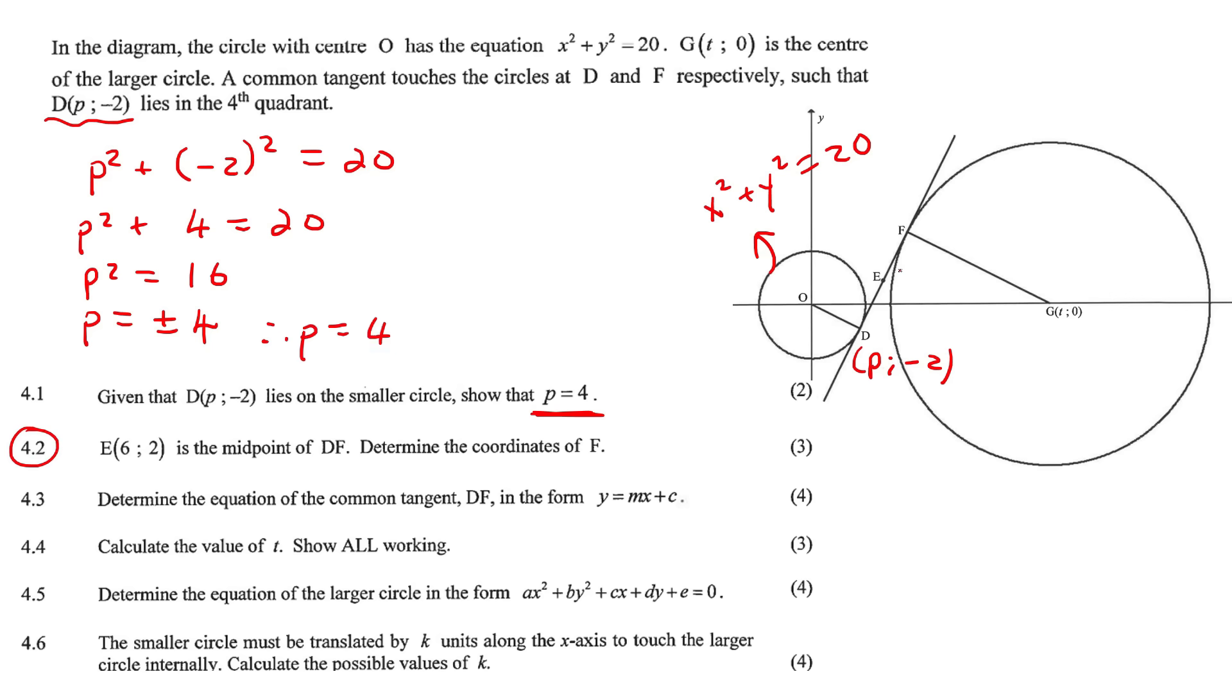Point E, which is (6,2), which is over here, is the midpoint of DF. Determine the coordinates of F. Okay well, that's easy because we now know what P is. So we can use the midpoint in reverse. If you have D, E, and you have F, and so then D would be (4, -2), E would be (6,2), and then F is (x,y). So just use the midpoint theorem.